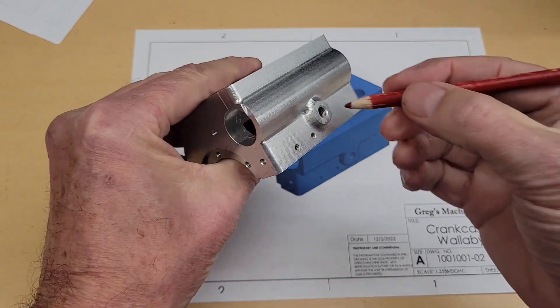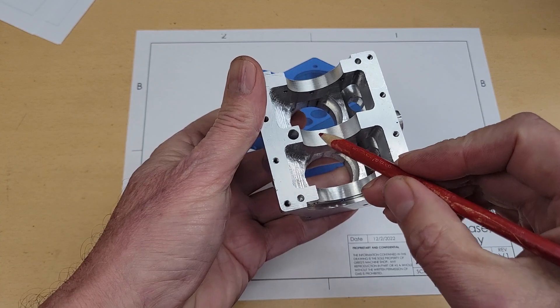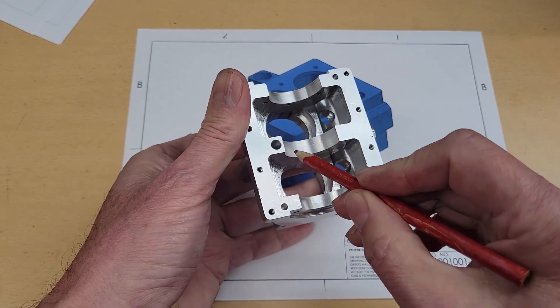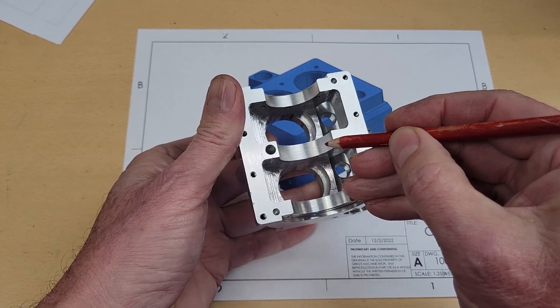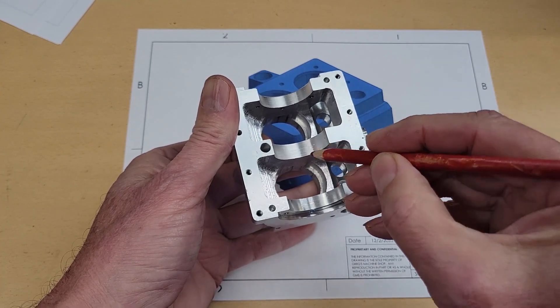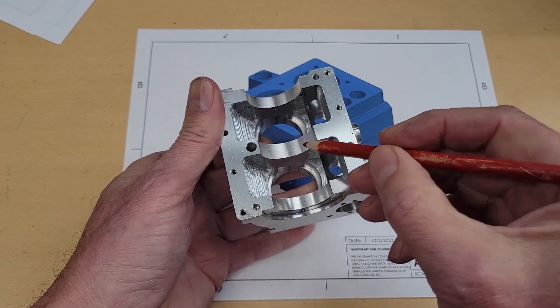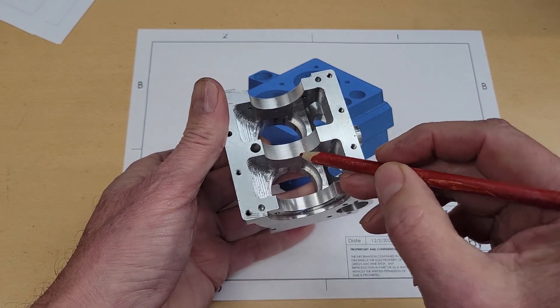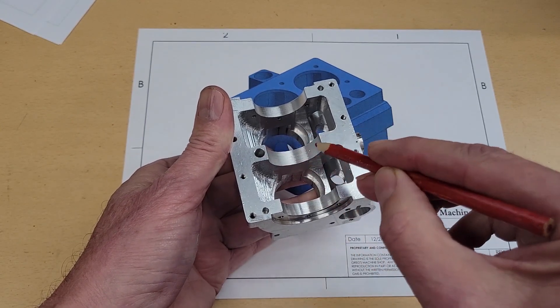So that finishes our crankcase. With one exception, there's three holes that are drilled in this center web. Two screw holes to retain the center bushing holder. And the third is an oil hole, which picks up this gallery hole that we just drilled. We're going to hold off on drilling those later. We're going to match drill those to the center bushing assembly.